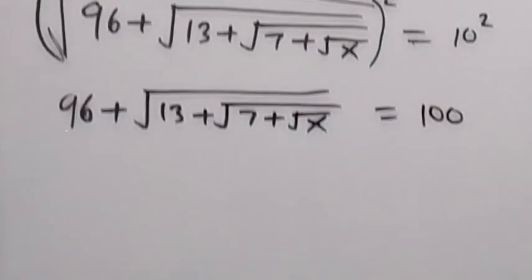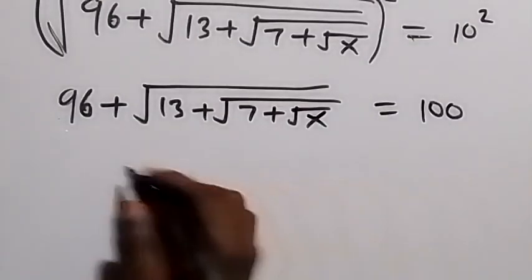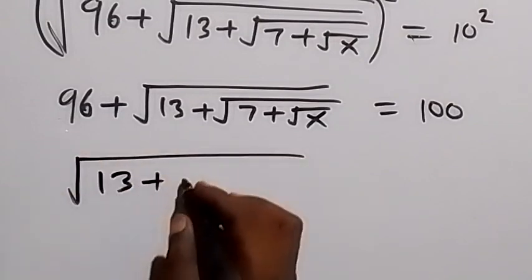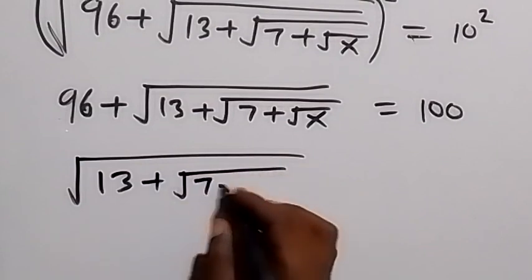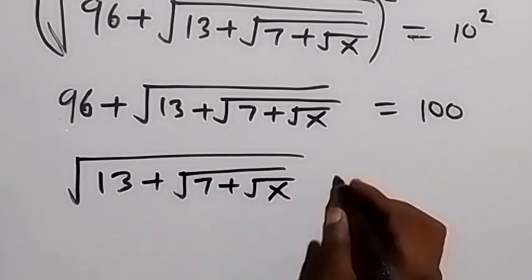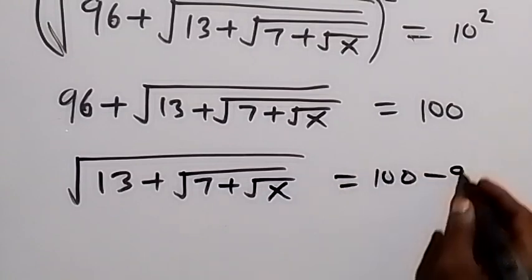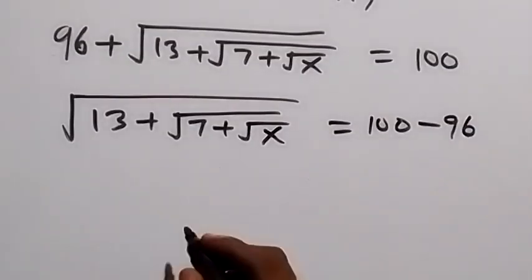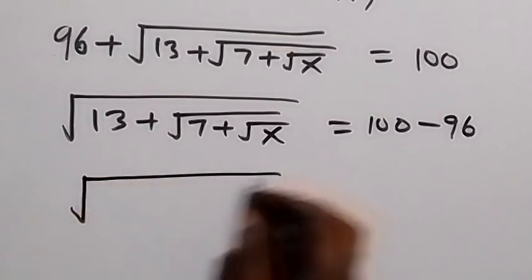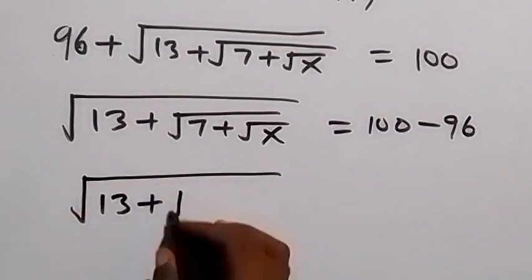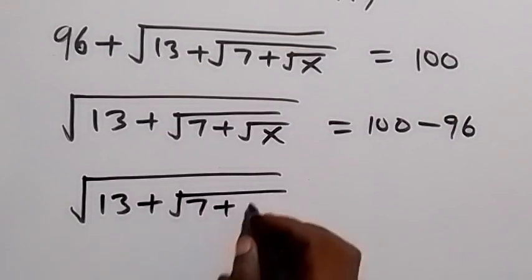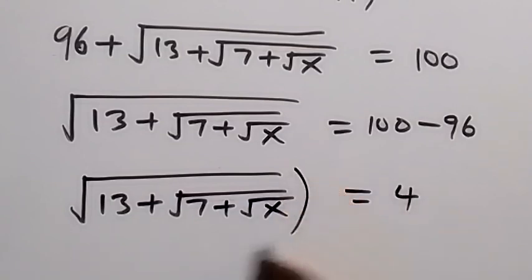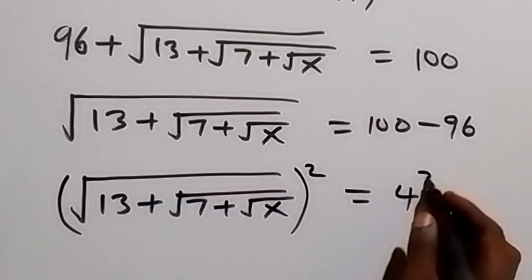From here, let's take 96 to this side, and it becomes minus. So we have square root of 13 plus square root of 7 plus square root of x, equals 100 minus 96, and 100 minus 96 gives us 4. So we have square root of 13 plus square root of 7 plus square root of x equals 4. The next step: take the square on both sides again.